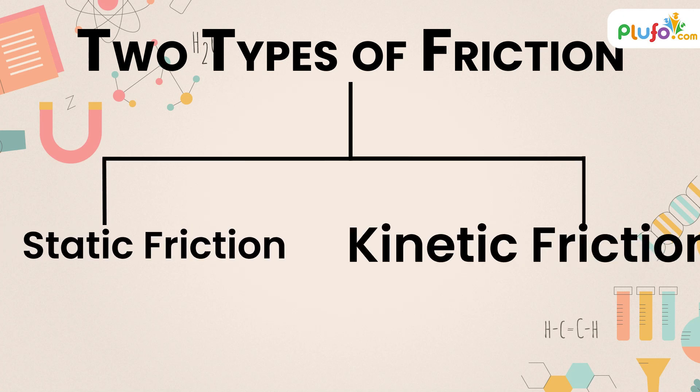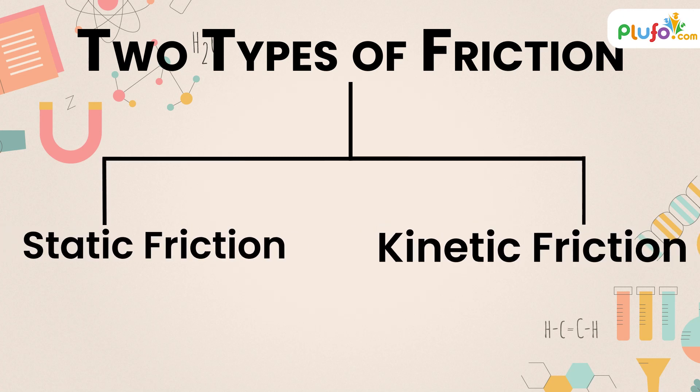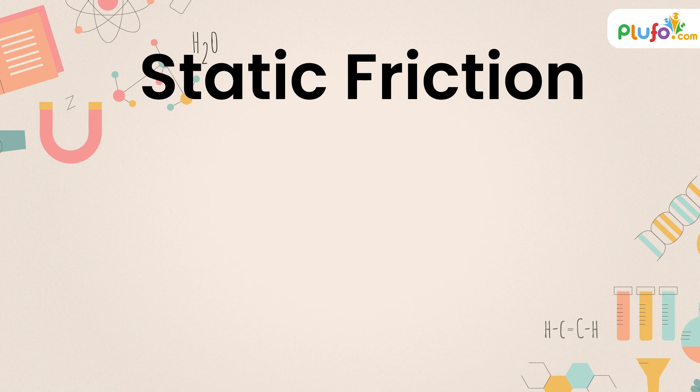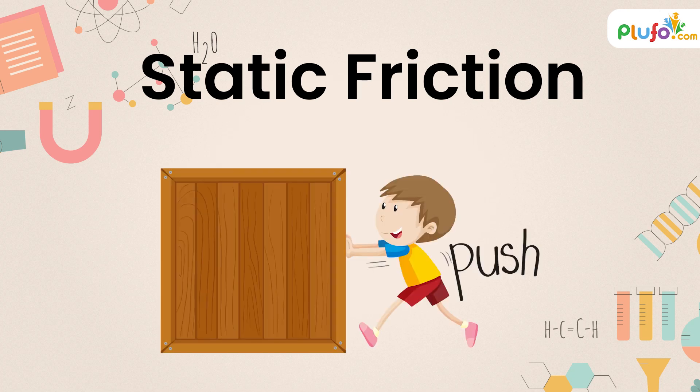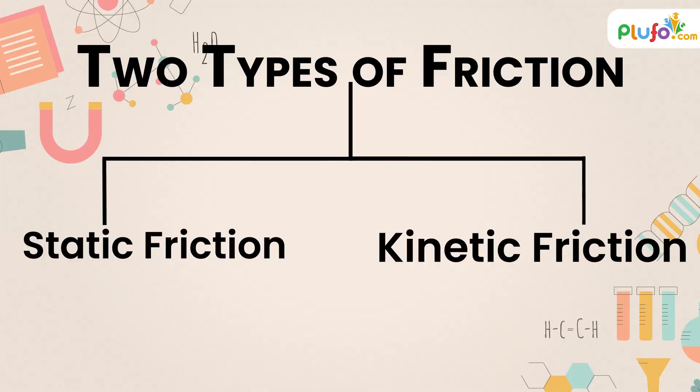One is static friction and another one is kinetic friction. What is static friction? For example, there is a box and you are trying to move the box but it is not moving. It means that the force applied by a person is balanced by the force of static friction. So when something is not moving despite our applied force, static friction has been created.